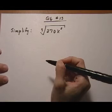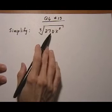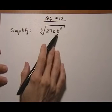Quiz 6, number 13. Here we're asked to simplify a cube root that has a number and also a variable on the inside.